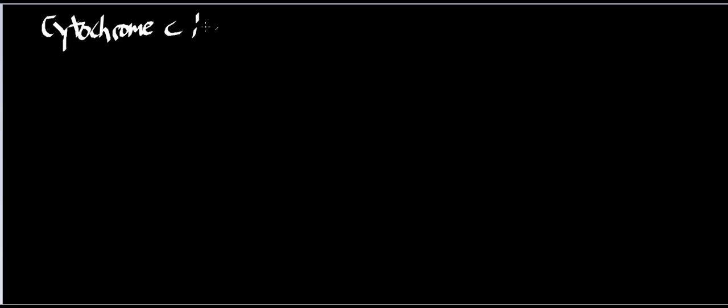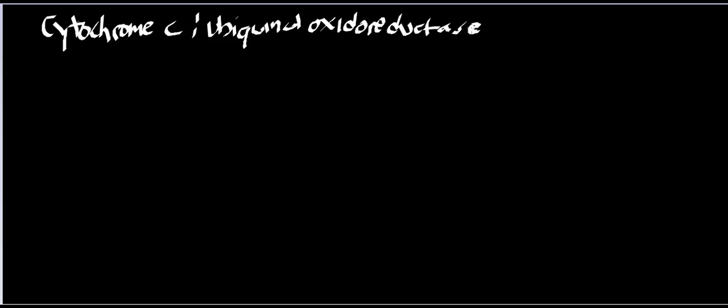Hi, welcome back. What I want to do in this video is take an in-detail look at Complex 3 in the respiratory chain. This complex has a name: it is cytochrome C ubiquinol oxidoreductase. The mechanism of this enzyme involves something called a Q cycle, where the Q stands for ubiquinol or ubiquinone. I'm going to draw it with a picture, because it really helps to see it visually.